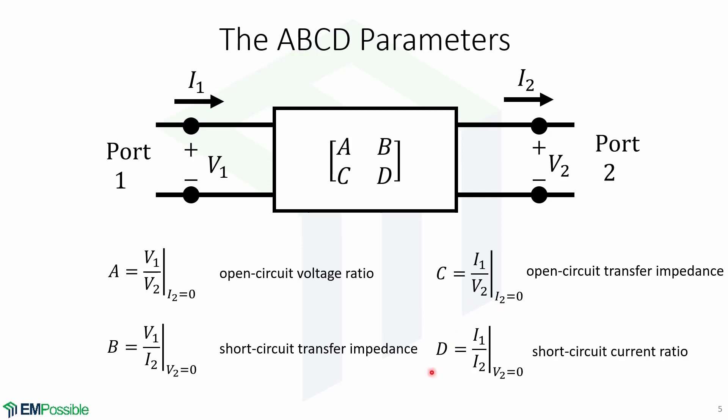And finally, the parameter D, which is the short circuit current ratio, which is equal to I1 over I2 when V2 equals 0.